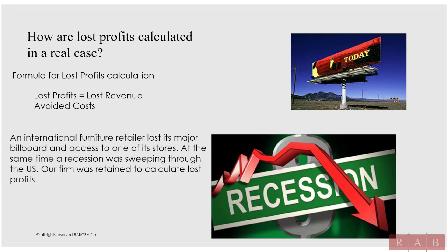But this was more complicated because it also occurred at the same time as a recession. So some of that $20 million in lost sales were not because people could not get off the highway — some were because of the recession. The location ended up going out of business because this happened over a period of years, so we had lost profits but we also had lost business value. In order to calculate the costs and prove what was the result of the recession versus losing the sign and the access ramp, I brought in a sign expert to assist us in testimony.